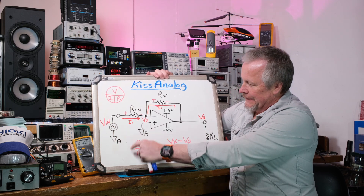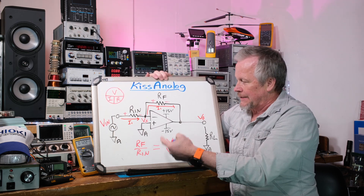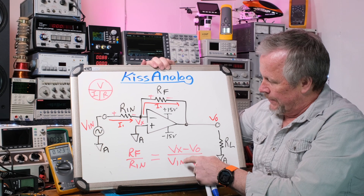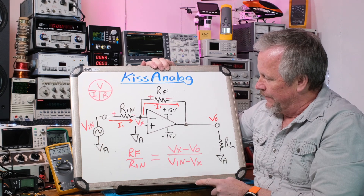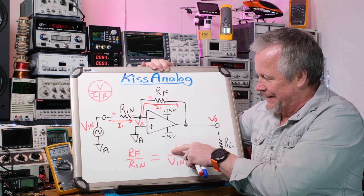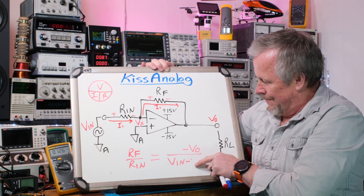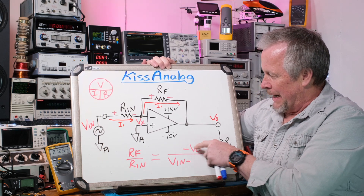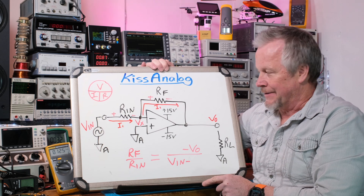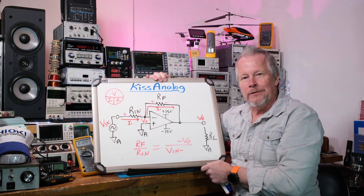Simplifying: RF/RN = (Vx − Vout) / (Vin − Vx). Now remember Vx is virtual ground — zero volts — so we substitute Vx = 0. That gives RF/RN = (−Vout) / Vin, which is −Vout/Vin. So the gain is −RF/RN — there's your minus sign, and there's your inverting amplifier gain equation.